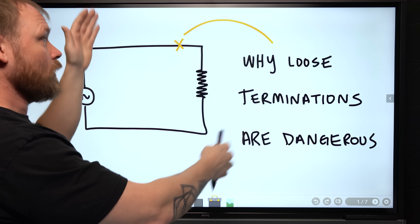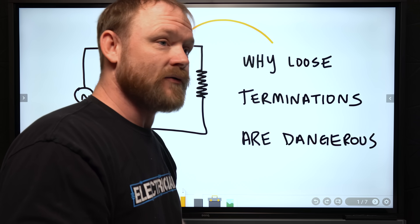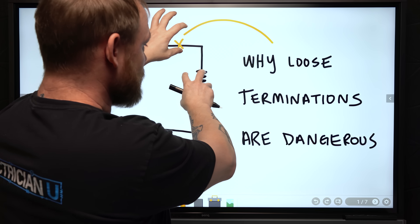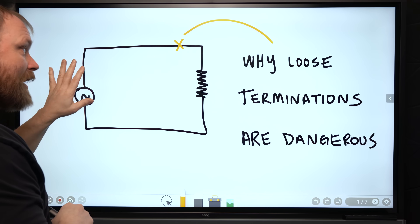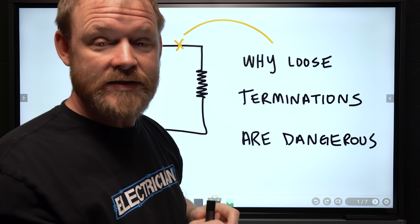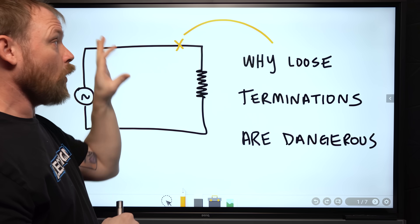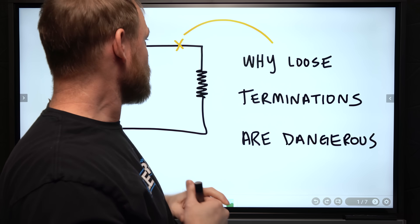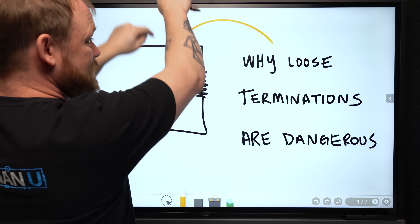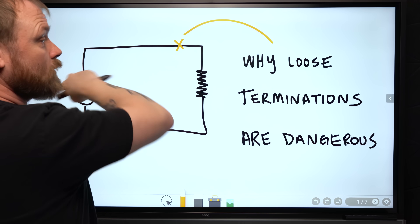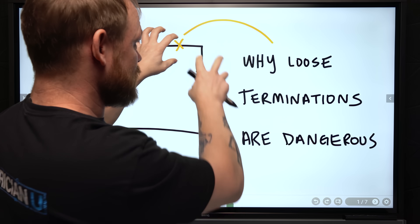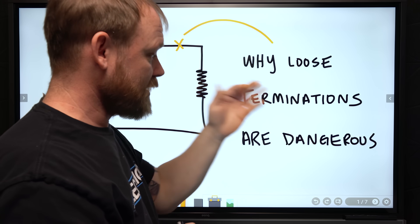In a series circuit we have a couple of rules. Kirchhoff's voltage law says all of the voltage drops across all the loads will match the source voltage. So with a 120-volt source, the total voltage drops across each resistance equals 120 volts. In a series circuit, current is the same throughout the entire circuit — if we're changing resistance values, it changes the total current, but the same amount of current goes through both components.